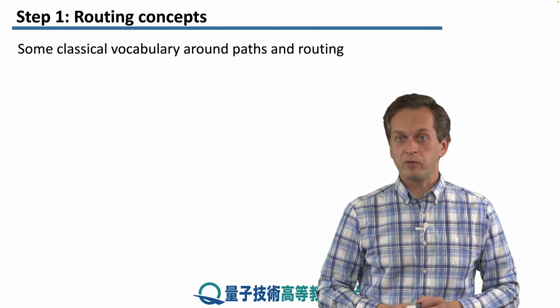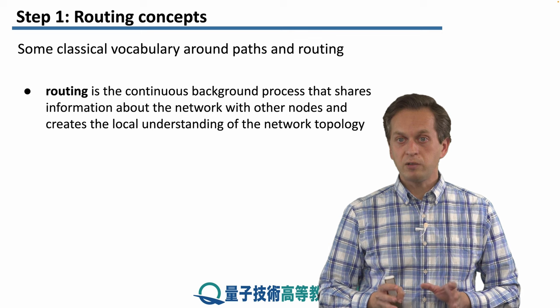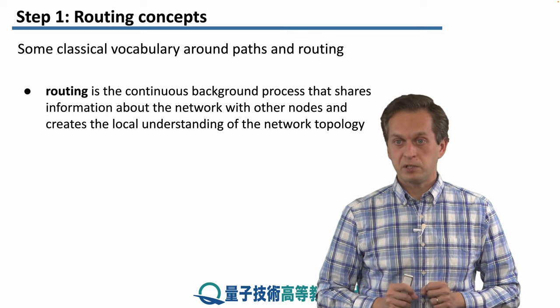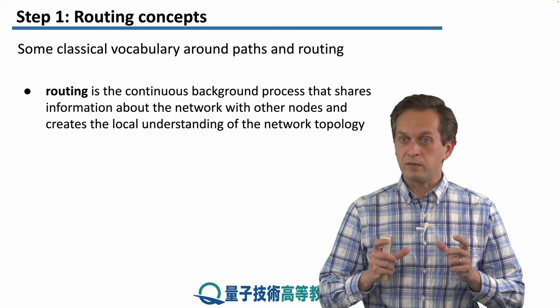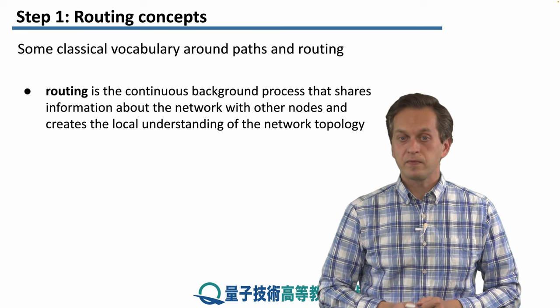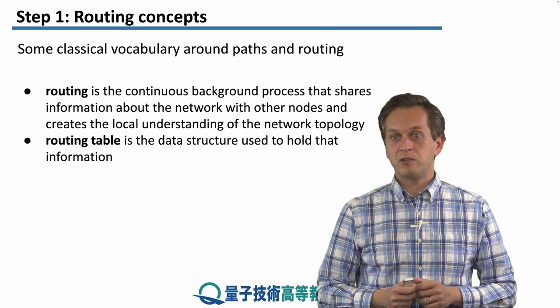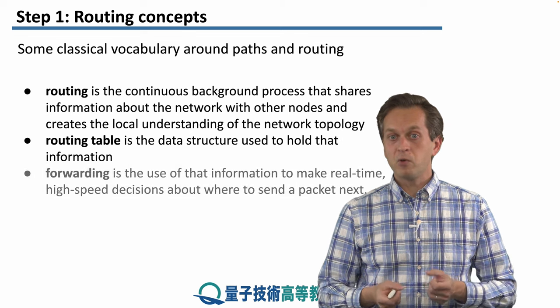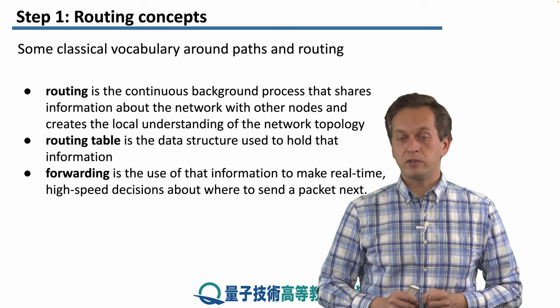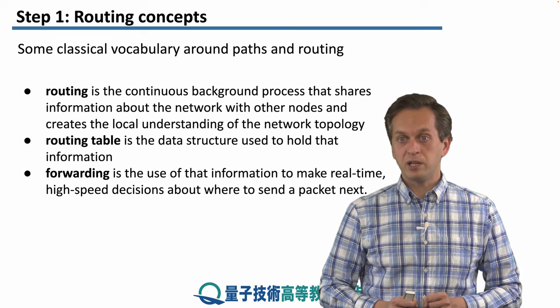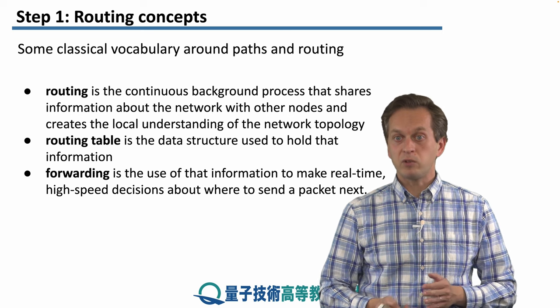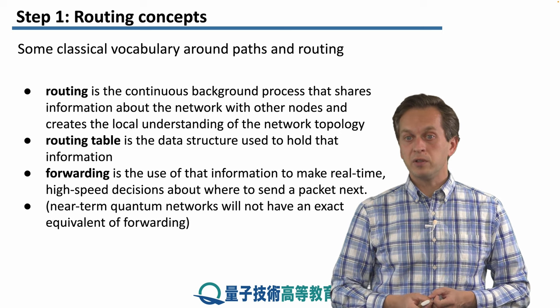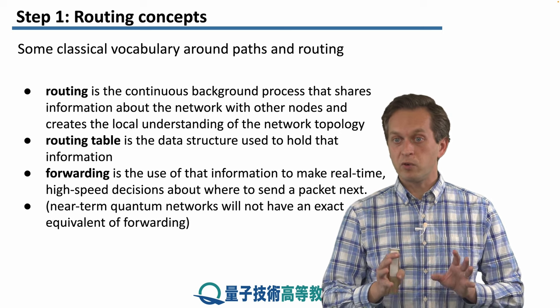Also some classical vocabulary around paths and routing. So routing is a background continuous process that's gathering information about the topology of the network and also about various link costs. A routing table is a data structure used to hold all of this information in one place. And forwarding is making use of the information that's presented in the routing table in order to make high-speed decisions about where to send a packet next. Near-term quantum networks will not have an exact equivalent of forwarding yet.